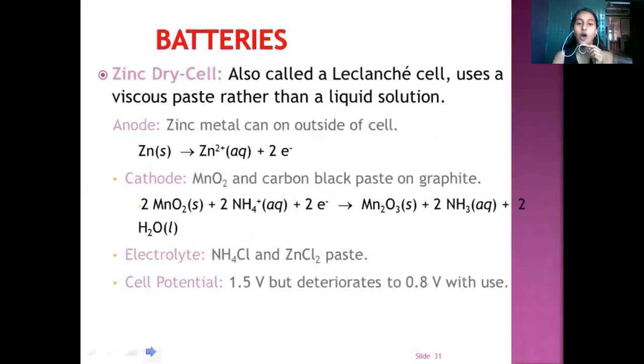Zinc dry cell, also called Leclanche cell, uses a viscous rather than a liquid electrolyte. Viscous paste is used in this cell. Anode, zinc metal can on outside of the cell. Zinc solid is converted to Zinc 2 plus plus 2 electrons. At cathode, MnO2 plus 2NH4 plus 2 electrons give Mn2O3 plus 2NH3 plus 2H2O. Electrolyte used in this cell is NH4Cl plus ZnCl paste. Cell potential is 1.5 but it then changes to 0.08 volt as per the use.